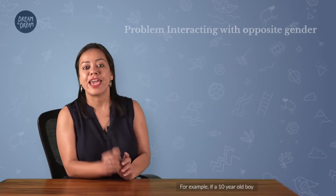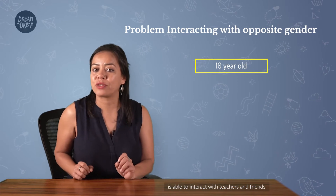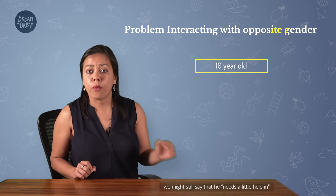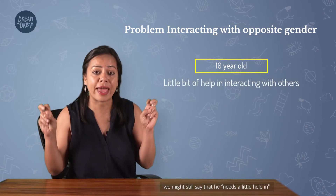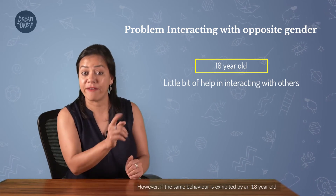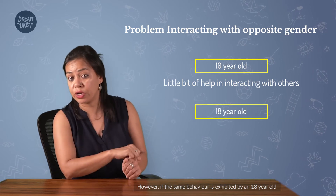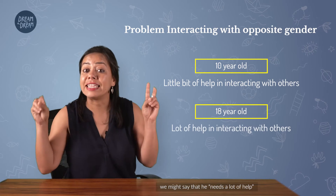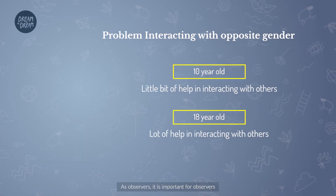For example, if a 10-year-old boy is able to interact with teachers and friends but not the opposite gender, we might still say that he needs a little bit of help in interacting with others. However, if the same behavior is exhibited by an 18-year-old, we might say that he needs a lot of help interacting with others.